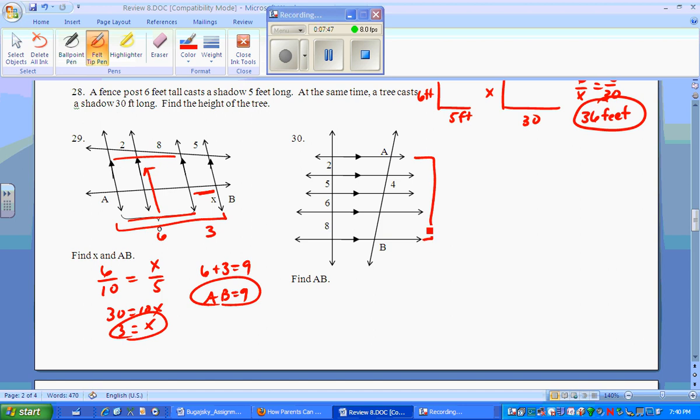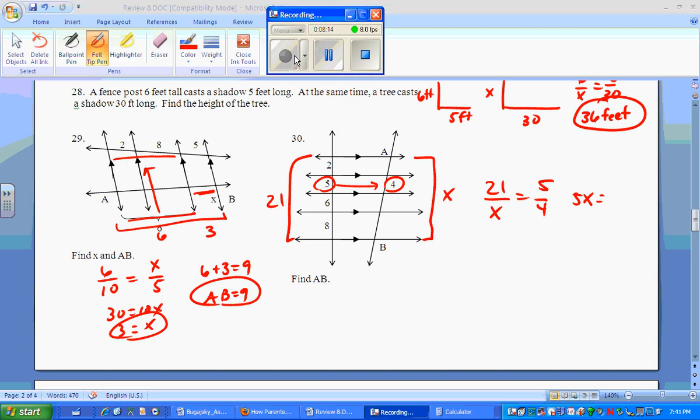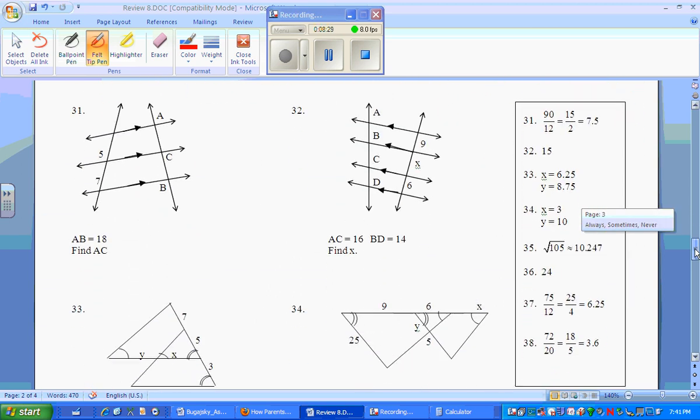Number 30. You want AB. AB is here, matches with the same on the opposite side. So you have 8 and 2, that's 10, and 5 and 6 is 11. So that's 21. This side is x. So I would match 21 is to x as 5 is to 4. 5x ends up equaling 84. Divide by 5 and you get 84 over 5 for your answer, or the 16.8 that you see in the answer column. Let's continue.